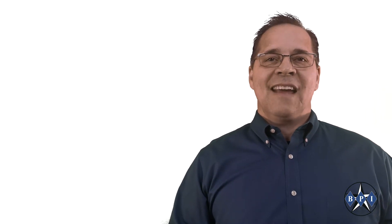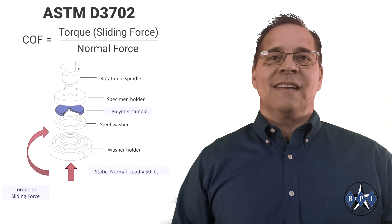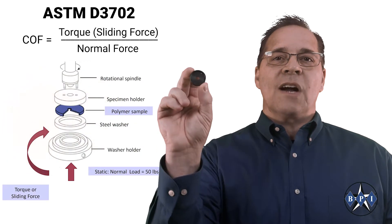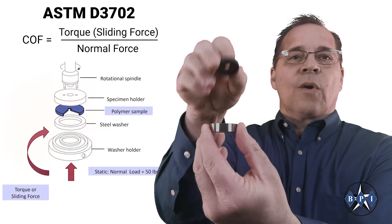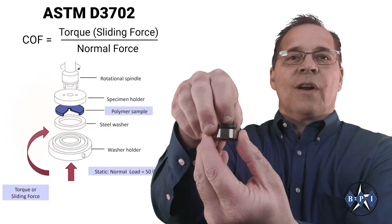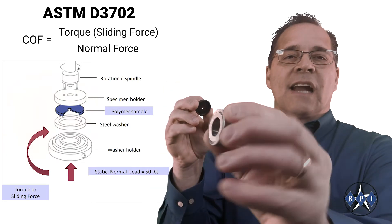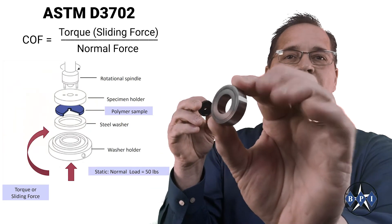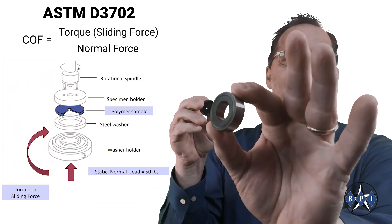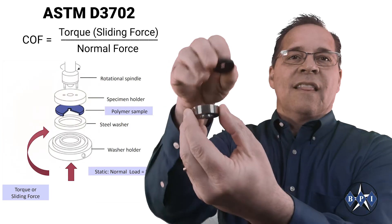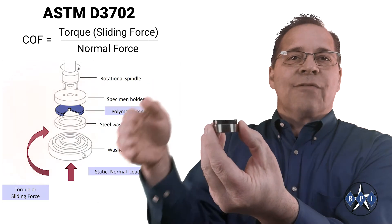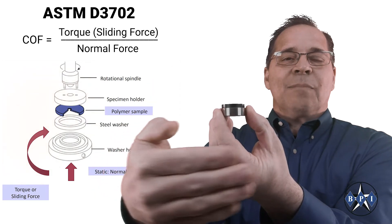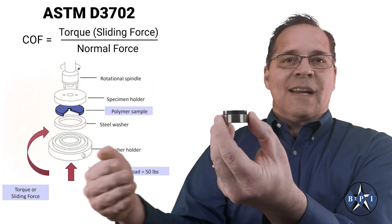The test is conducted by taking a thrust washer and applying a normal force down on a plastic versus typically an unlubricated polished steel, then applying a sliding force to get the plastic rotating.